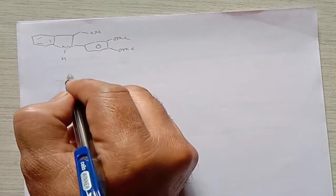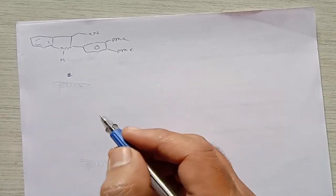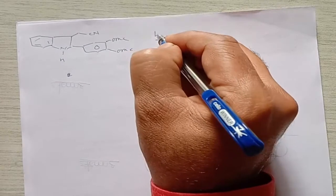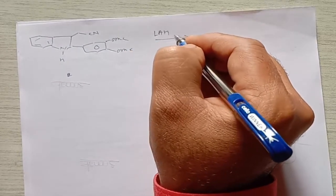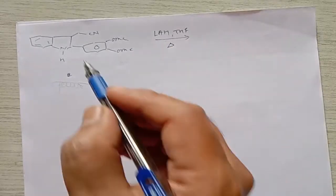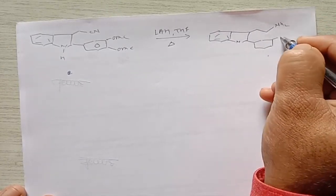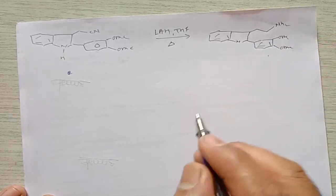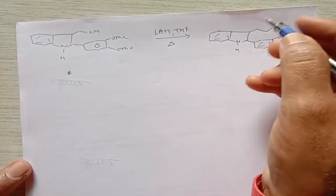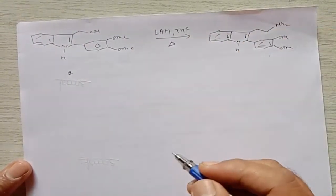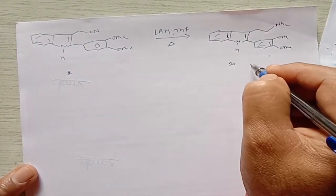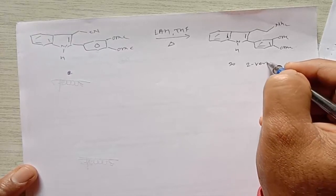In the further step, treating this intermediate with lithium aluminum hydride (LAH) in THF solvent reduces the nitrile group to an amine. The reduction gives a compound with a CH2CH2CH2NH2 chain, while remaining functionalities including the double bond stay the same. This gives intermediate 20, named 2-veratryl tryptamine.